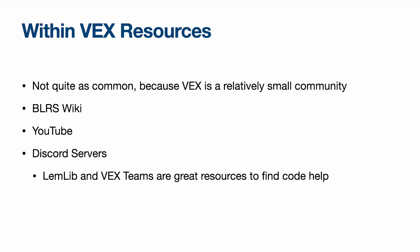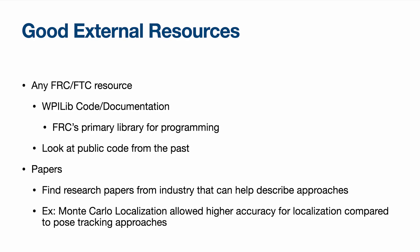Next is finding resources. VEX is a smaller community, but there are still some amazing resources, especially the BRLS Wiki. There are some on YouTube other than these videos, and Discord servers such as LemLib and VexTeamsOfTheWorld are great places to find code help. Another great place is any FTC or FRC resource — I always think the WPILib code and documentation is absolutely incredible. FRC teams often release their code from past years, so just take a look at what they do. For papers, I'd look at research papers from industry. For example, I found Monte Carlo localization this year, which allows for higher localization accuracy compared to the odometry tracking approaches, and that allowed me to be a lot more competitive in skills.